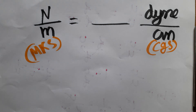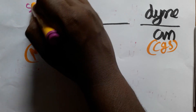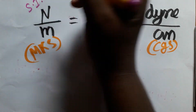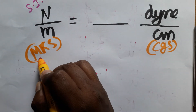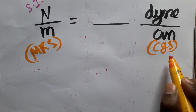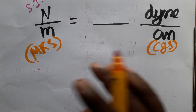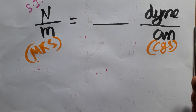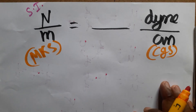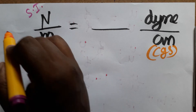Today we are going to learn the SI unit of surface tension and convert it to the CGS system. We are converting from the MKS system — meter, kilogram, second — to the CGS system — centimeter, gram, second. If you like my channel, please subscribe.